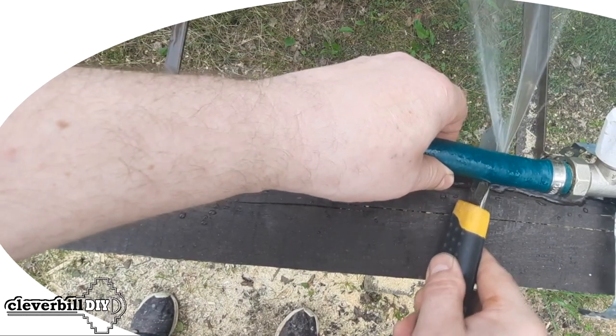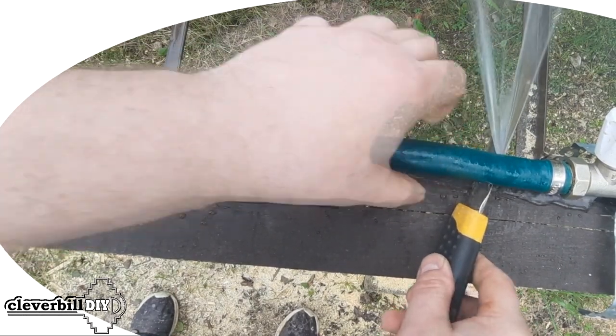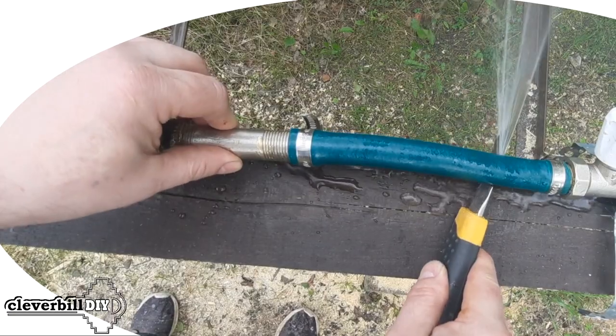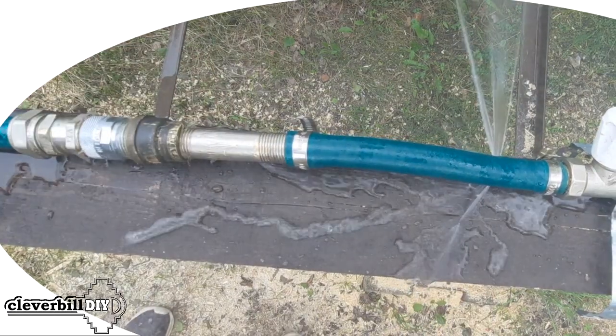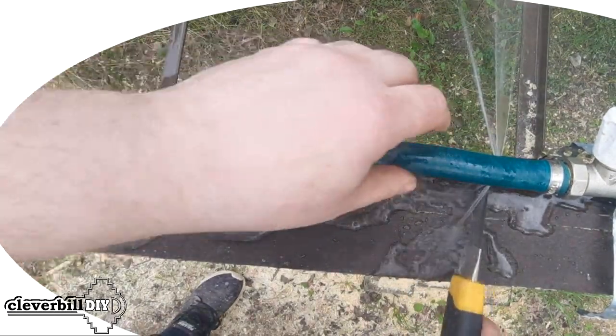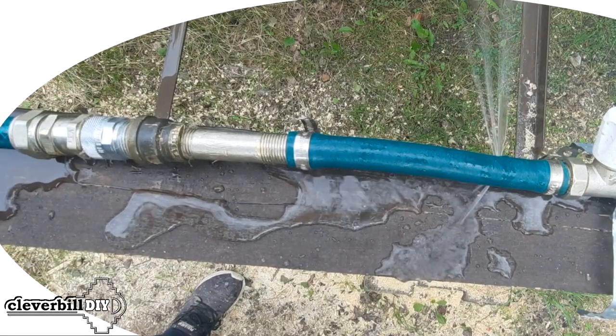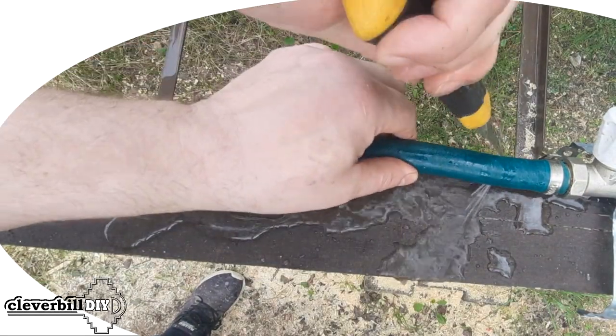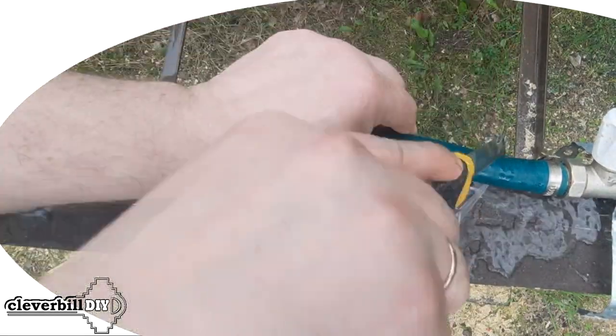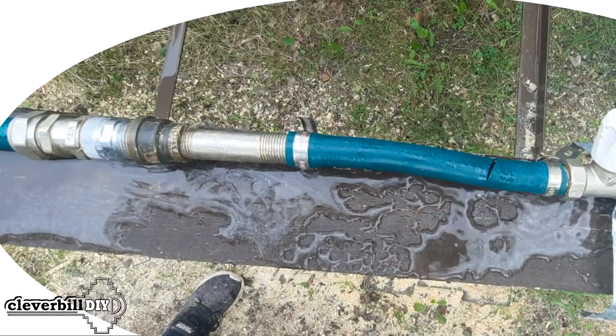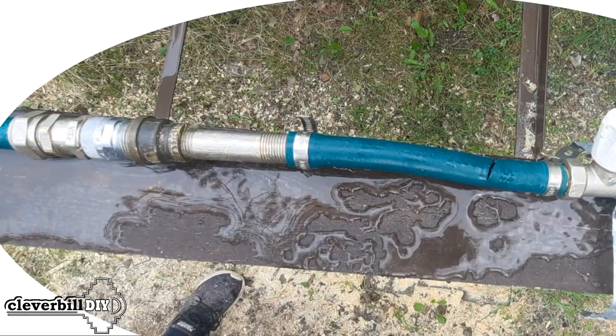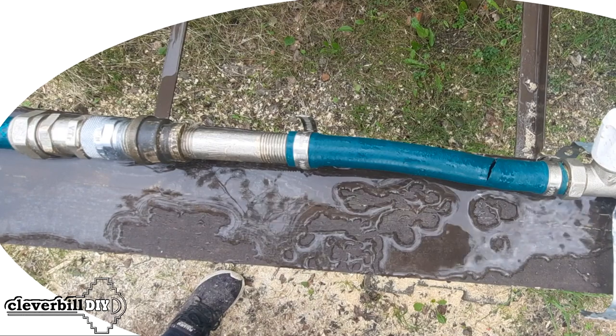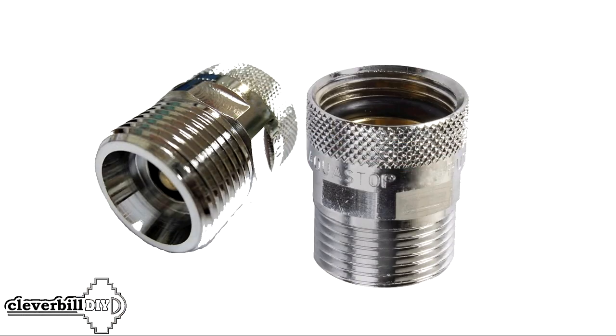Of course, if there is no protection against leaks at all, the use of such a valve according to the principle 'at least something' is possible and will be justified. After all, the valve with some degree of probability will be able to protect against complete hose rupture, and this in any case minimizes the risks. You can see more details about testing such a valve in my other video, the link to which will be in the description or in the attached comment to this video.